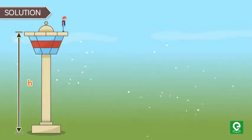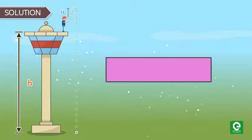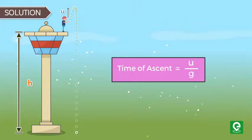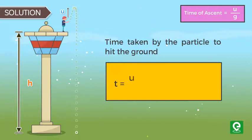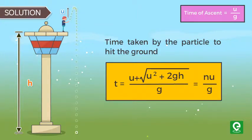Solution: We are given the height of tower is h. A particle is thrown vertically upwards with a speed u. We know time of ascent is equal to u divided by g. We have already derived the time taken by the particle to hit the ground to be equal to u plus under root u square plus 2gh whole divided by g. We are given that time taken by the particle to hit the ground is equal to n times time taken by the particle to reach the highest point.